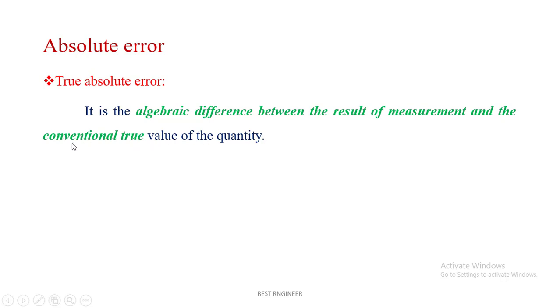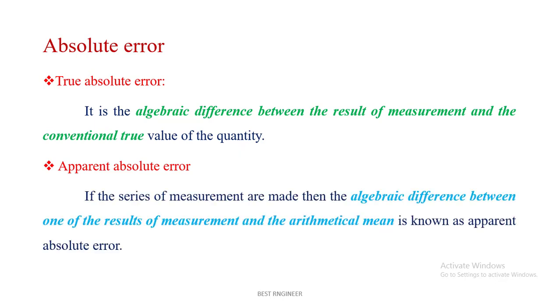Apparent absolute error is an algebraic difference between one of the results of measurement and the arithmetic mean, and is known as apparent absolute error.